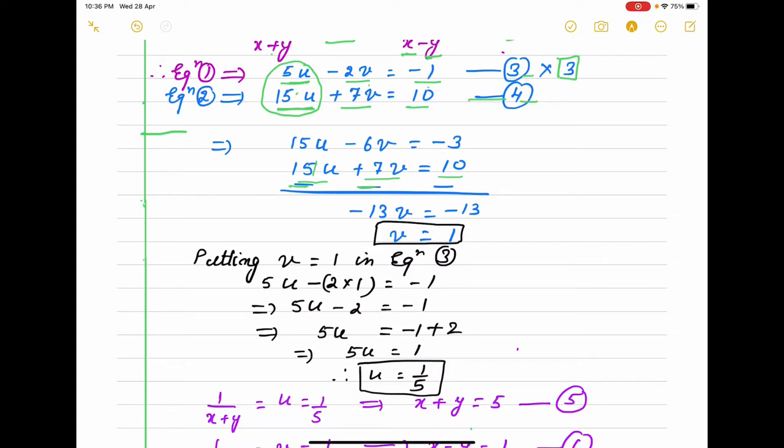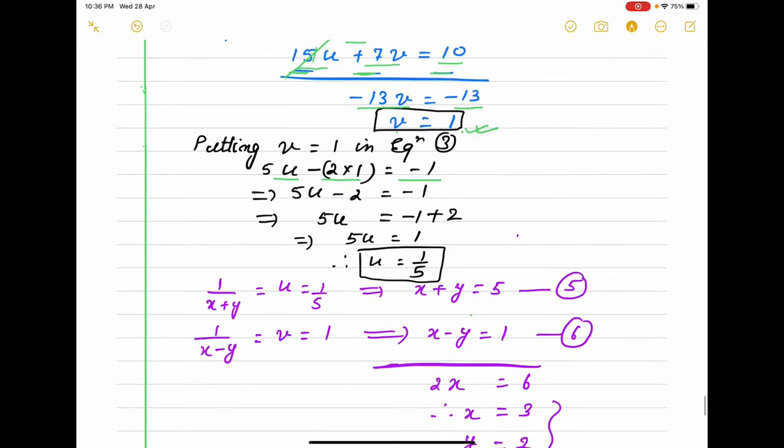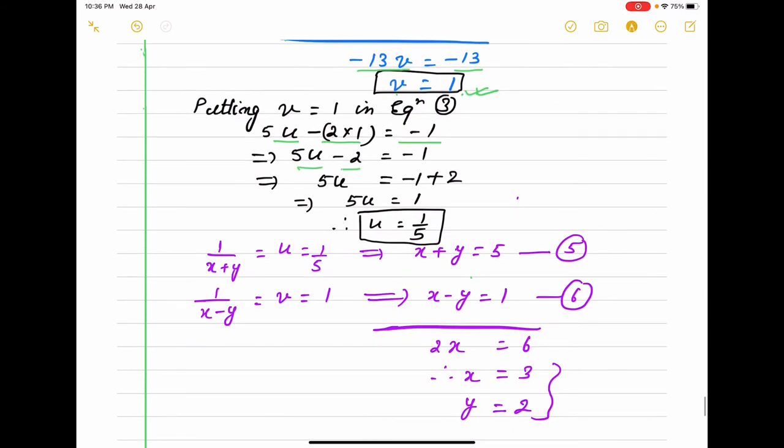Now we subtract. I put the sign of minus, 15u will cancel. -6 minus 7 will be -13v = -13. So v will be 1. We put this value of v in equation 3. You can put in any equation 3 or 4, whichever coefficients are smaller will be easy for you. 5u - 2(1) = -1. That is 5u - 2. You have to simplify this equation. 5u is, taking that side, it will be +2. So 5u = 1, u will be 1/5. I have got v=1 and u=1/5.